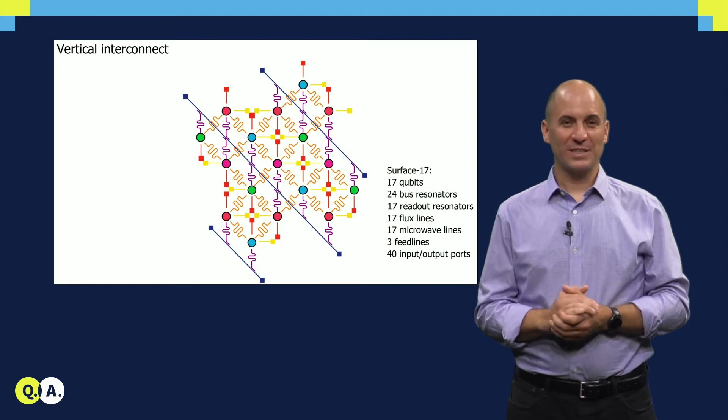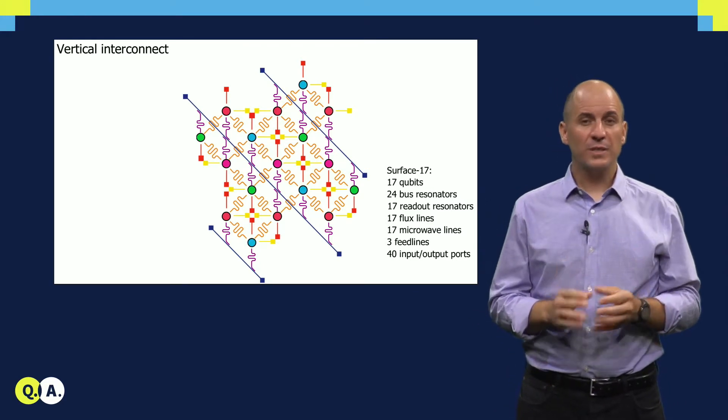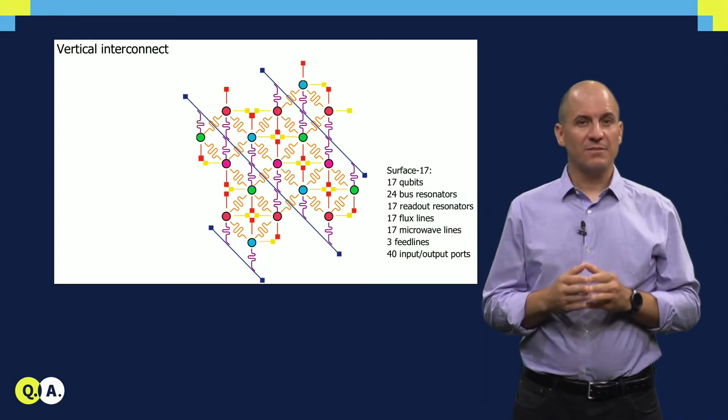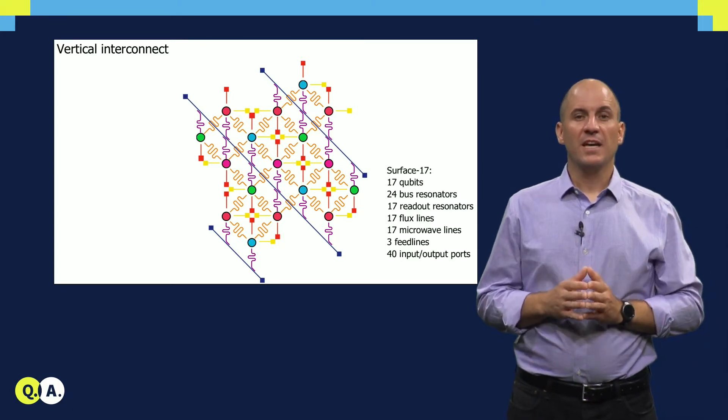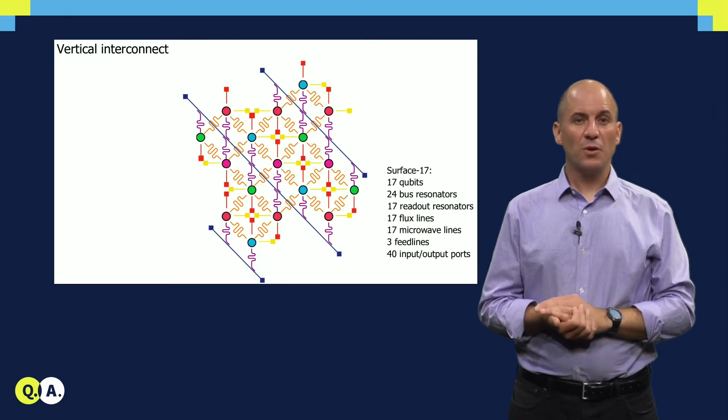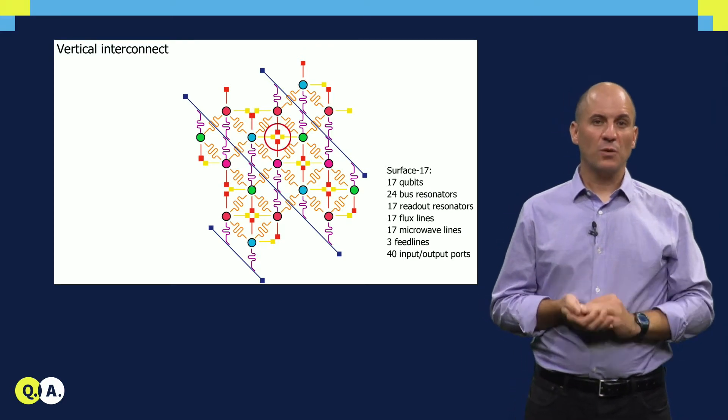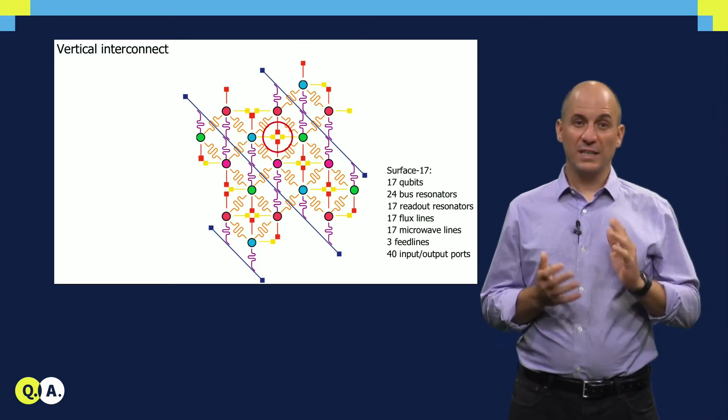So let's look at the totals for surface 17: 17 qubits, 24 buses, 17 readout resonators, 17 flux lines, 17 microwave drivelines, and 3 feedlines. The grand total of ports connecting the quantum chip to the outside world is 40.